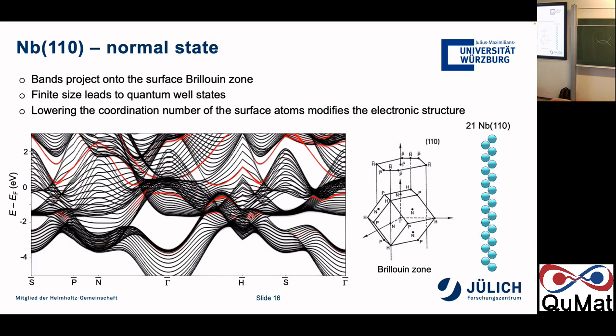The Bogoliubov-de Gennes approach allows lambda to be more complex than a single number, going beyond BCS theory. For the approach where you precompute lambda, you need to know the mechanism — whether it's a conventional superconductor where electron-phonon interaction is responsible for superconducting coupling. If you have magnetic atoms, magnetic fluctuations can also play an important role in determining the coupling. The DFT doesn't inherently know about phonons — you would need to calculate phonons separately using density functional perturbation theory or other techniques.